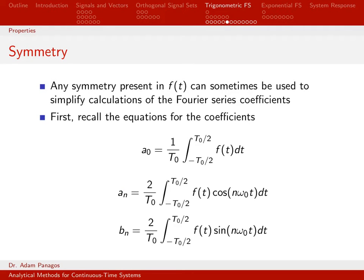In the examples that we worked a couple videos ago, we saw that we could exploit symmetry to really simplify our computations. Let's just kind of recap some of the highlights and summarize the equations from that. First, let's talk about just the general equations that we use when computing the Fourier series coefficients. Here's our equation for a0, here's our equation for an, and here's our equation for bn.